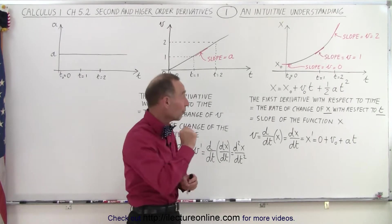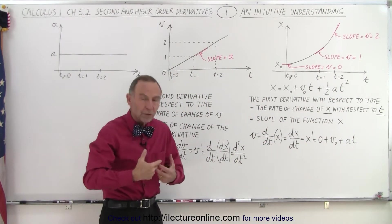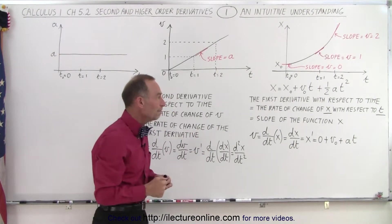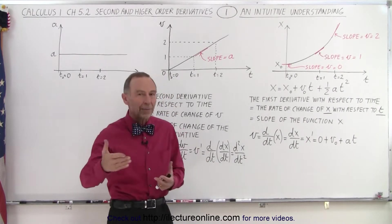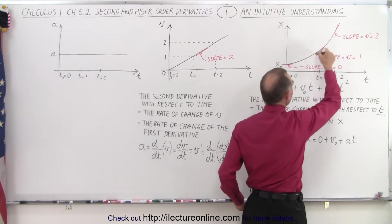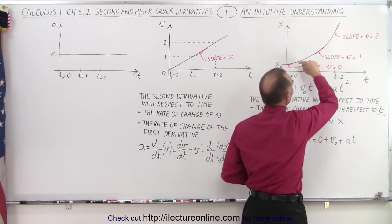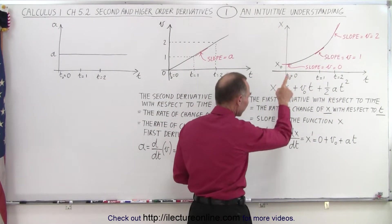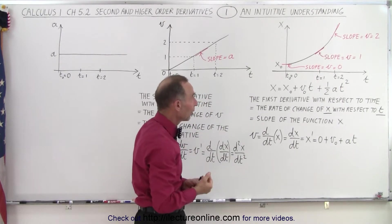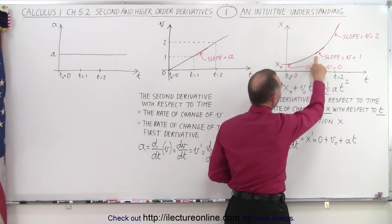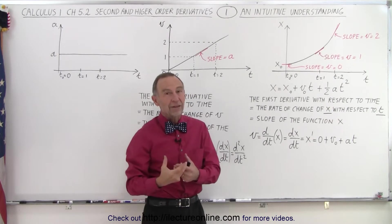If we take the first derivative of that function with respect to time — because whenever you take a derivative you have to take it with respect to some other variable — that gives us the rate of change of x, distance, with respect to time. It tells us how fast the distance is changing as time elapses. Since this is a second order equation, the function gives you a parabola on an x-t graph, and since it gets steeper and steeper, that means as time goes on you're covering more and more distance more quickly. The first derivative gives us the velocity, and the first derivative of a function equals the slope of that function when graphed. In the beginning the slope is zero, then it equals one, then two — the slope gets steeper and steeper — and that slope, the first derivative of x with respect to time, represents the velocity of the object.